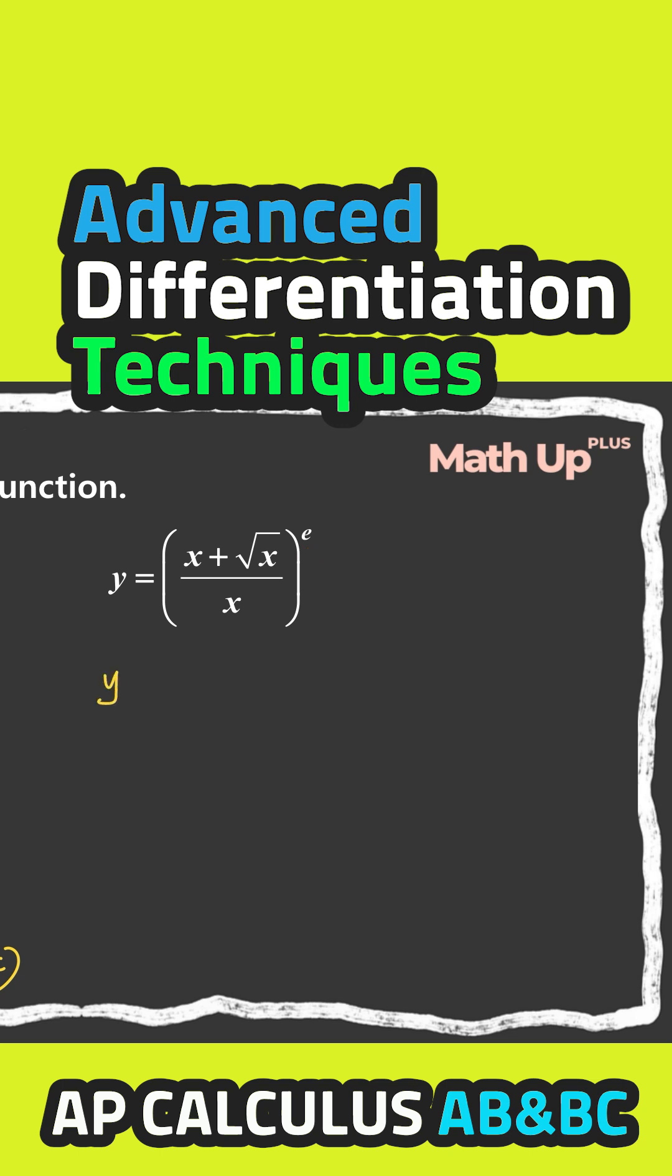So, the derivative of this function is equal to, we have to apply the power rule first. So e times x plus square root of x over x, e minus 1, times we have to multiply the derivative of this function right here.